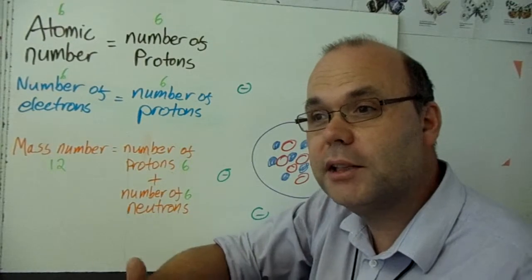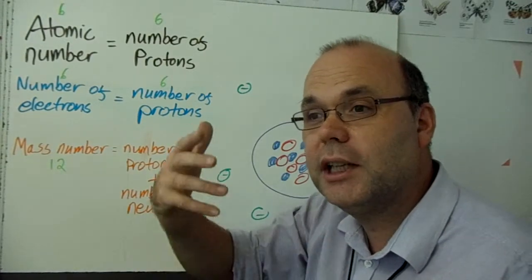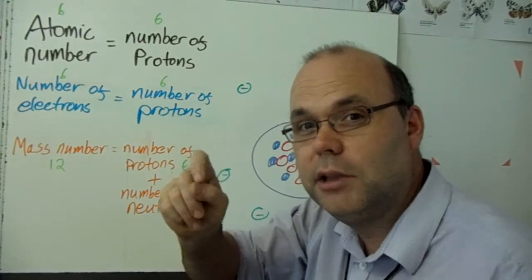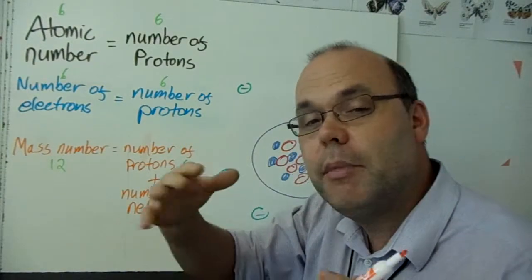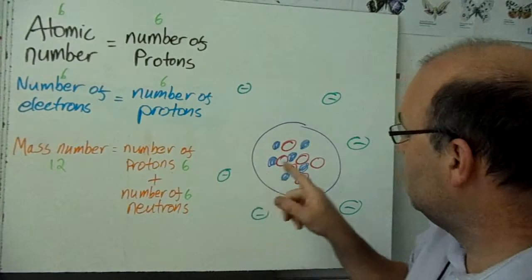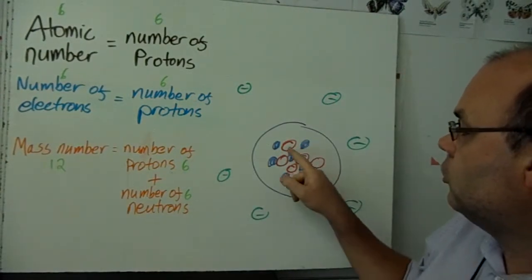Now remember I told you the mass of the electrons is tiny. They're so small you wouldn't be able to see them. So the mass is all in the nucleus. It's all this stuff. The protons and neutrons.